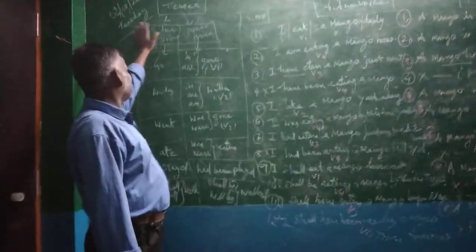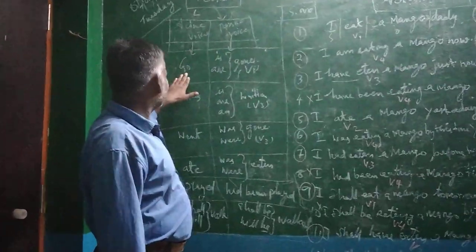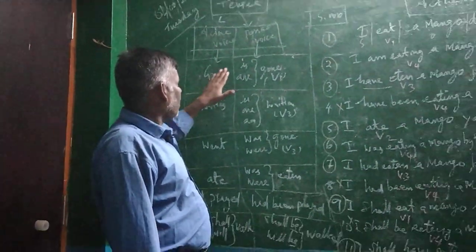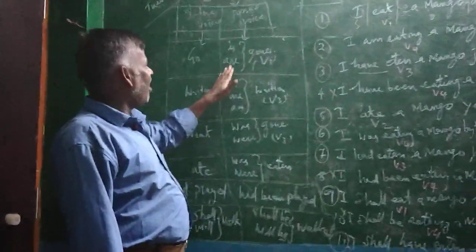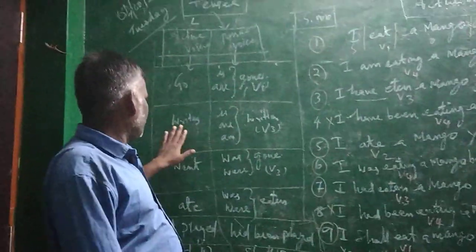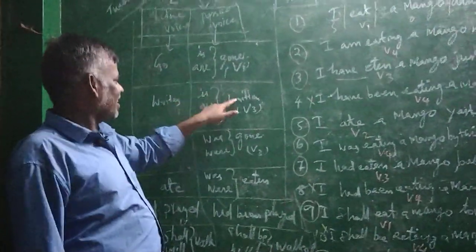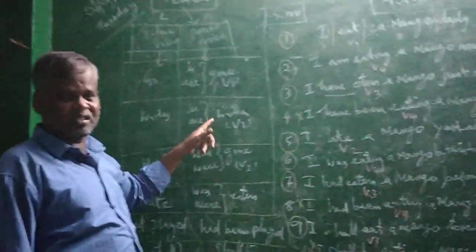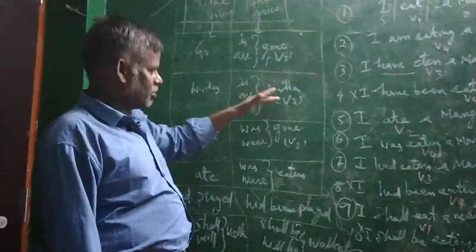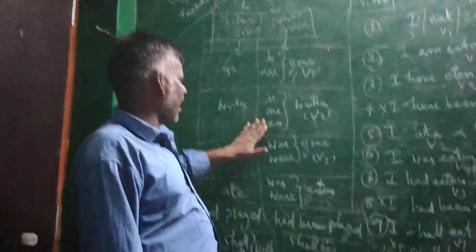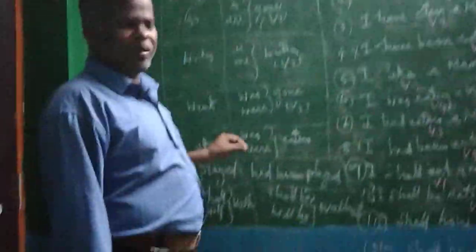Look at the active-wise tenses: present tense, past tense, future tense. For 'go' — active-wise, 'is gone' or 'are gone' is the passive form. 'Writes' is the active form, but 'is written' or 'are written' — that is called the passive form. For past tense, 'went' is simple past active; 'was gone' or 'were gone' is the passive form. 'Ate' is past tense active; 'was eaten' or 'were eaten' is the passive form. Am, is, are are used for present; was, were for past.